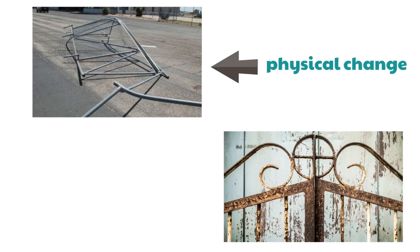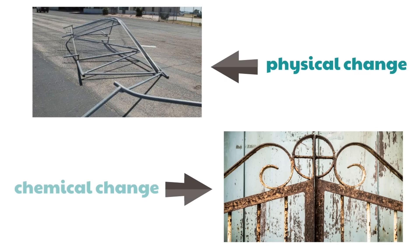Look at this gate — it looks all rusted. The gate has been rusted. Have you ever seen a gate like this? Now, the rusting — is that a physical or a chemical change? Yeah, it's a chemical change, because it's changed the type of matter.